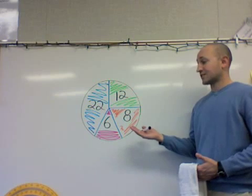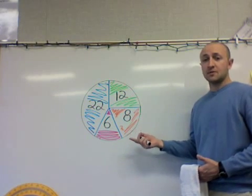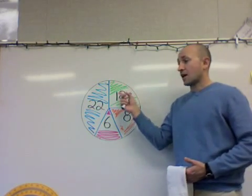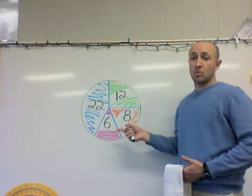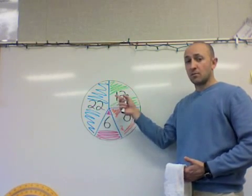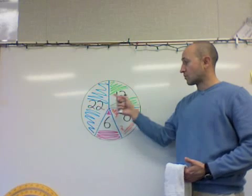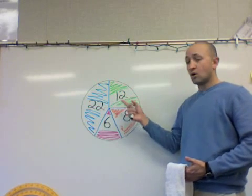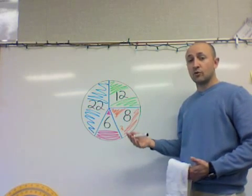In part two of our lesson, we once again have a circle graph, but this time it's a little different. Instead of having angles or measurements or percentages, we have numbers. So these numbers could represent maybe an activity or something that somebody likes to do if we were to give them a survey.